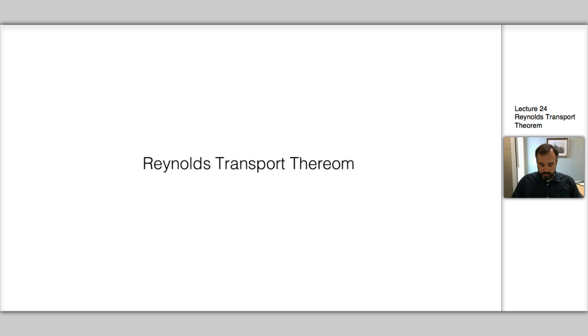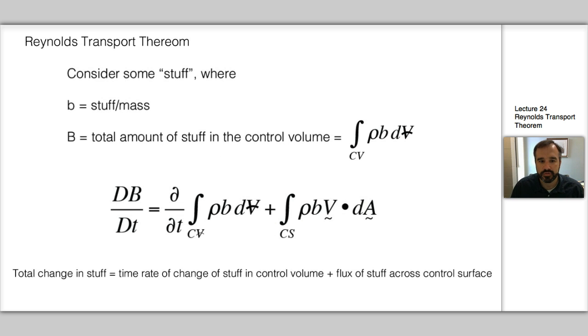So the Reynolds Transport Theorem considers some stuff. In this case, I've described it or labeled it lowercase b, and it's some stuff per mass. And then we say that capital B is the total amount of stuff in our little control volume that we've been dealing with all semester.